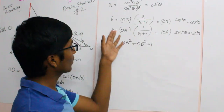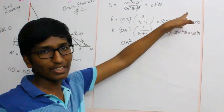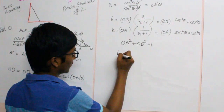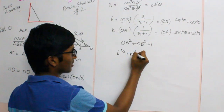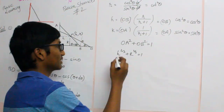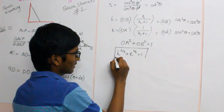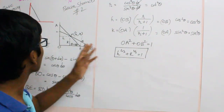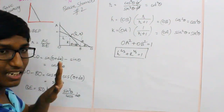Therefore, we can easily find the locus of (H, K) as we have them in terms of trigonometric expressions. Therefore, H^(2/3) + K^(2/3) = 1, since sin²(theta) + cos²(theta) = 1. This is our required locus — it is nothing but the ladder envelope.